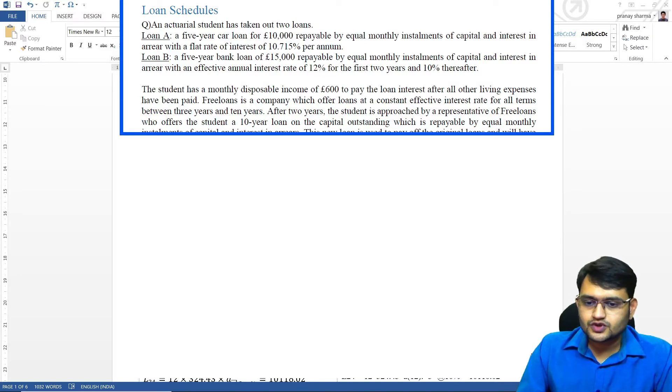So first the question. An actual student has taken out two loans. Loan A, a five-year car loan for 10,000 repayable by equal monthly installments of capital and interest in arrears with a flat rate of interest of 10.715% per annum. So we have flat rate here.